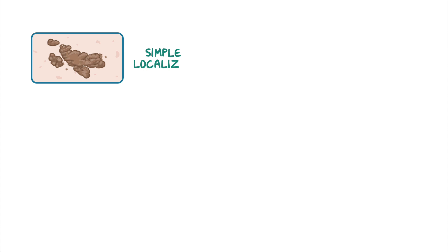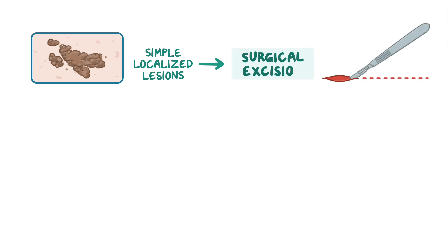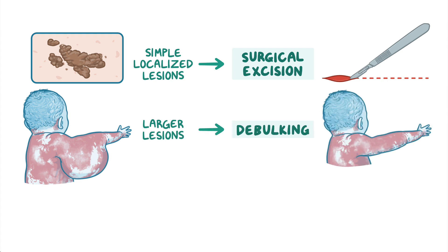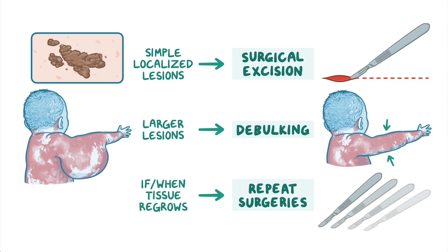In the case of simple localized lesions, overgrown tissue may be surgically excised. In larger lesions, debulking or removal of part of the lesion may be performed. If or when the tissue regrows, repeated surgeries may be needed.